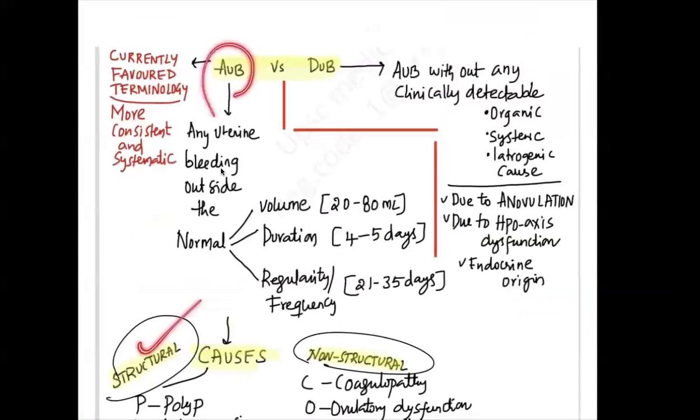This is AUB and these are the causes. But DUB, is it obsolete? No, we still use DUB. So where do you use dysfunctional?